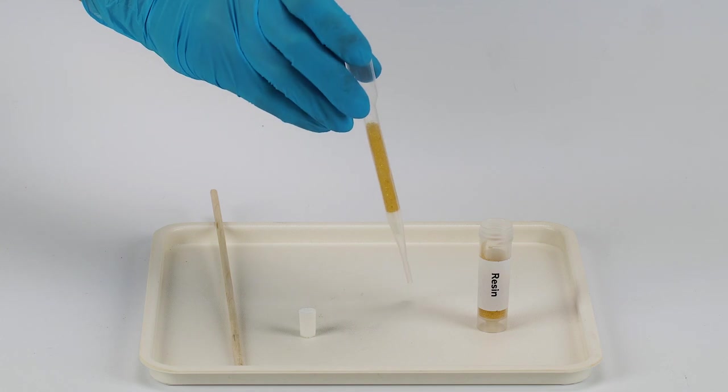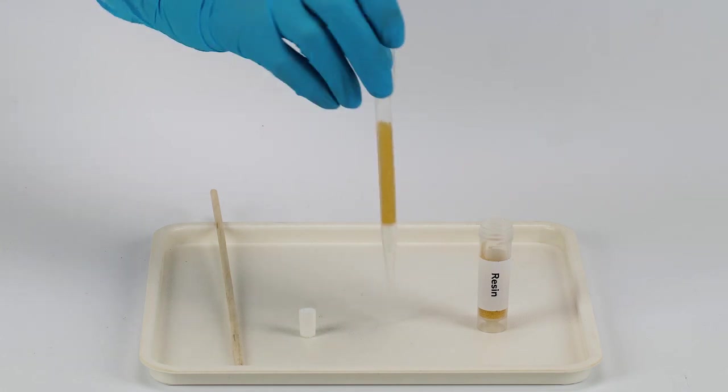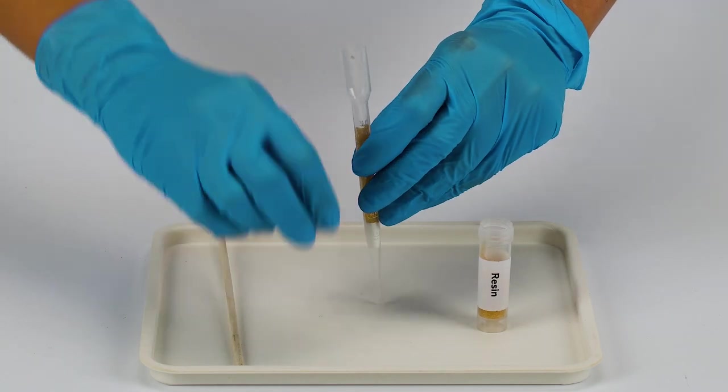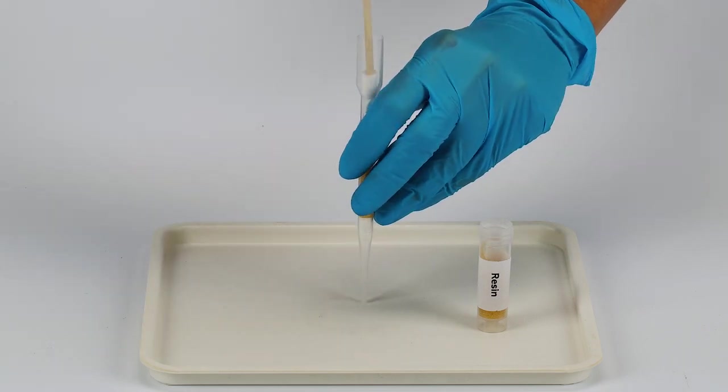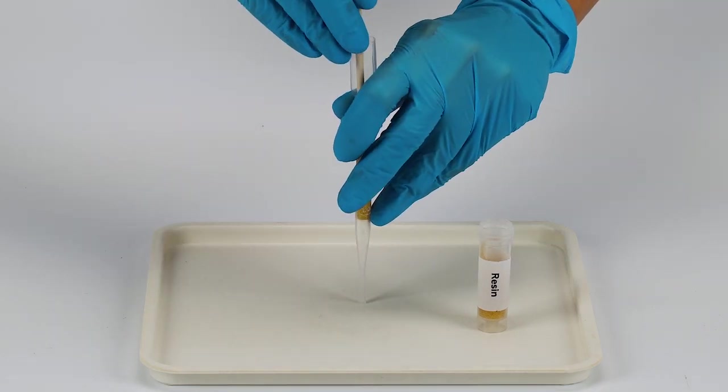Fill the filter body with resin up to the three mark. Insert a second cotton cylinder using the wooden stick. Press the cylinder a bit to make sure it's securely in place. Your filter is ready.